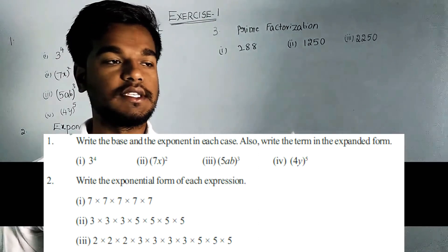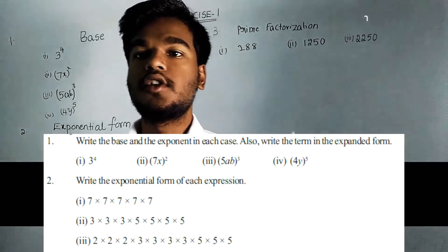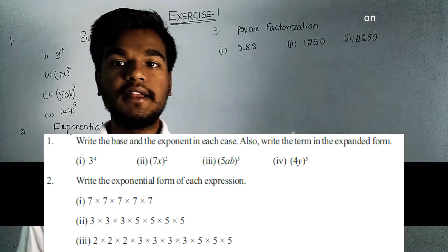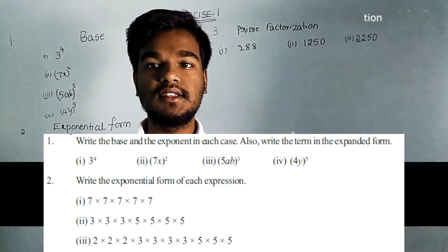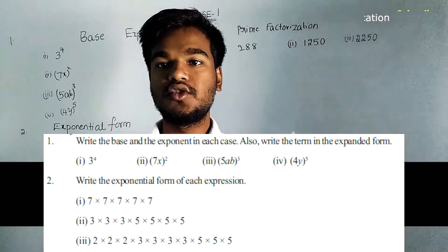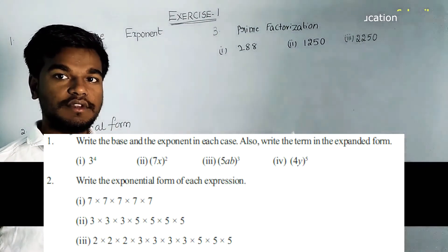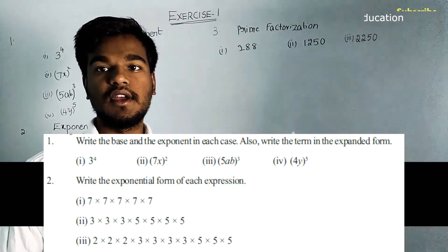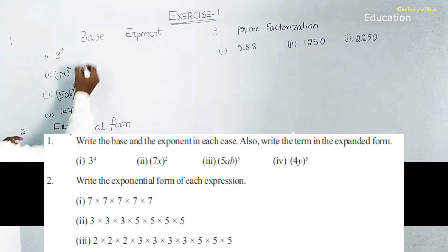In this module we are going to discuss solutions for exponents in the first exercise. The first question is to write the base and exponent. A memory trick: in the alphabet, B comes before E, so base comes first and exponent comes next. The number at the bottom is always the base and the number at the top is the power or exponent.